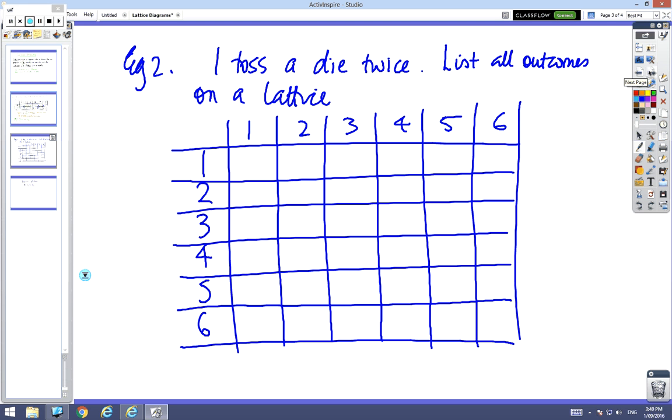This one here: I toss a die twice, so I've got one to six and one to six, listing all the possible outcomes. I want you to pause and write in the first one - would be one and a one, one and a two. Pause, and when you're ready, come back. It's a bit laborious - one three, one four, one five, one six, etc.